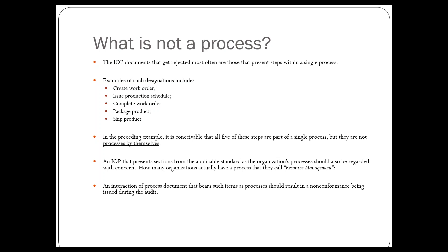In terms of what is not a process, the interaction of process documents that are going to get rejected most often are the ones that present steps within a single process. For example, steps like 'create a work order,' 'complete the work order,' 'package the product' — these are conceivably steps within a single process, but in all likelihood they are not processes by themselves. When we see an IOP document that presents these types of items as full processes, bearing in mind the ISO 9000 definition of interrelated or interacting activities, that's going to potentially get raised as a non-conformance.